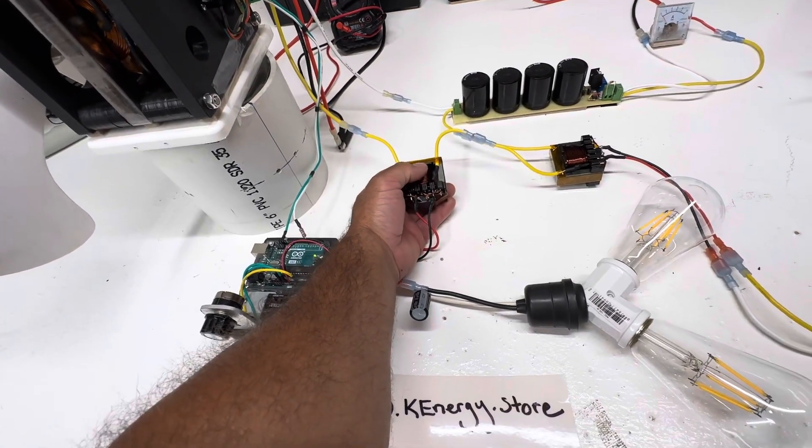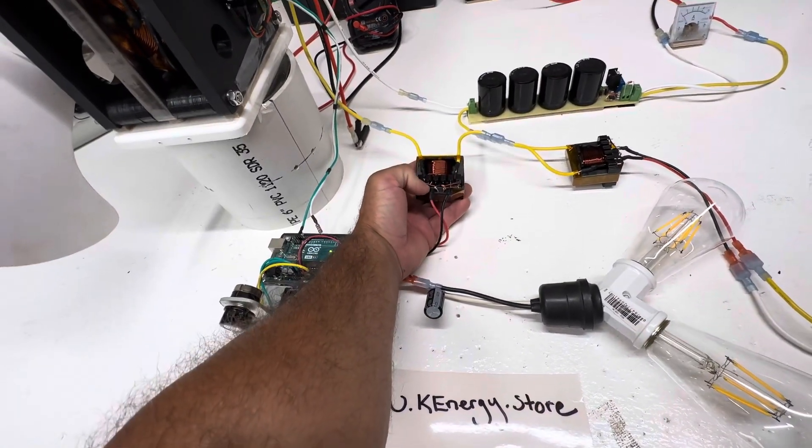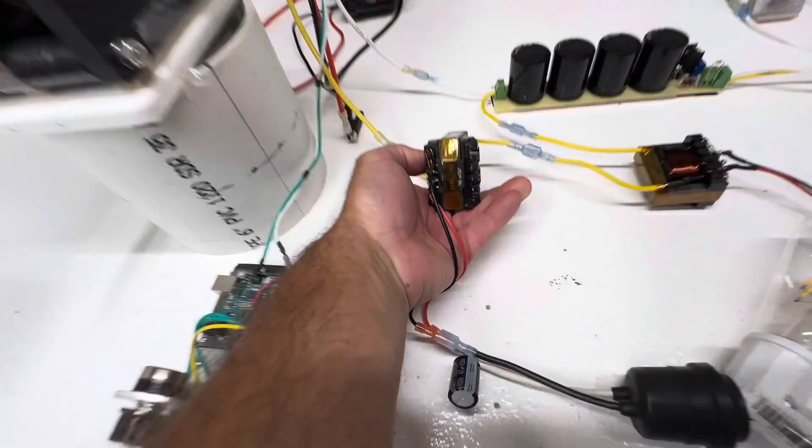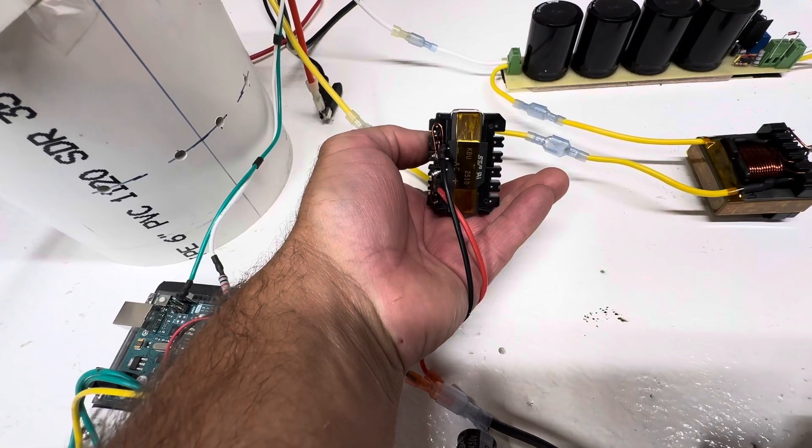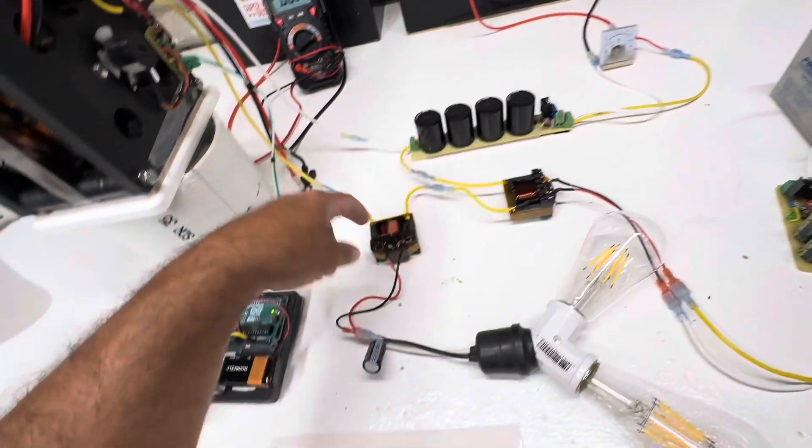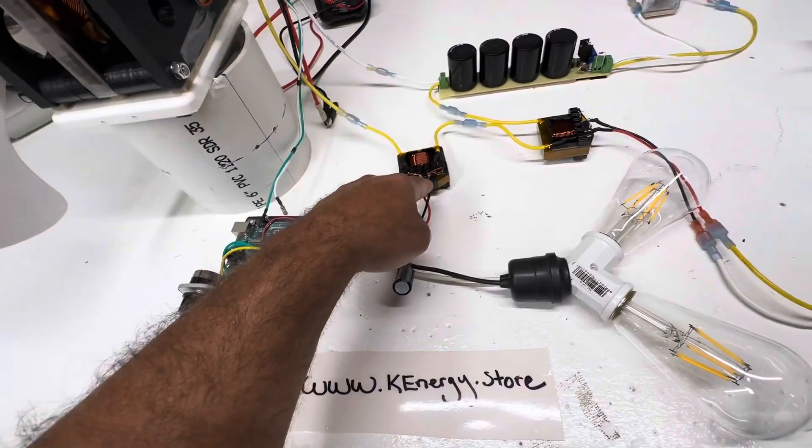They've got four layers of 18 gauge magnetic wire, two of them. And then in the front here, they have a rectifier for the output. So one of the coils goes through and through, and then the secondary comes out here with the rectifier.